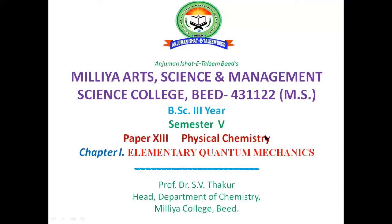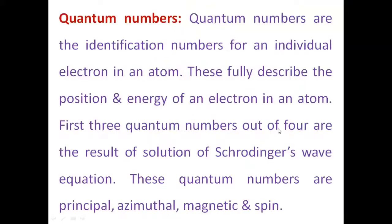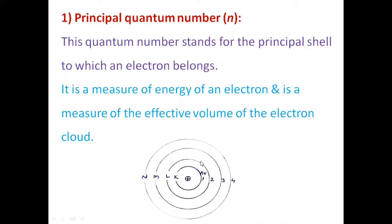Welcome all. There are total four quantum numbers: principal quantum number, azimuthal quantum number, magnetic quantum number, and spin quantum number.